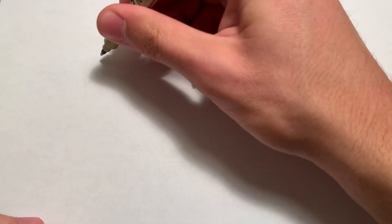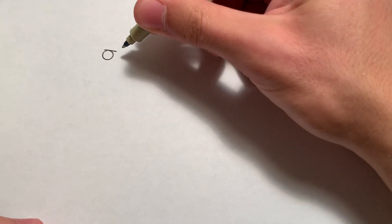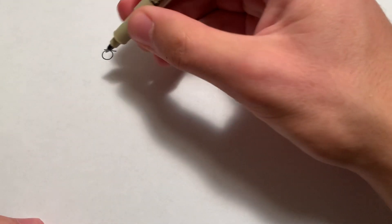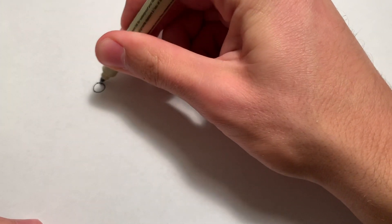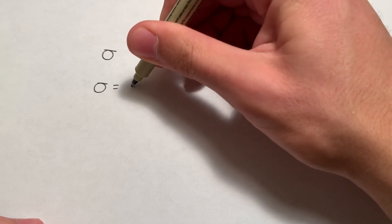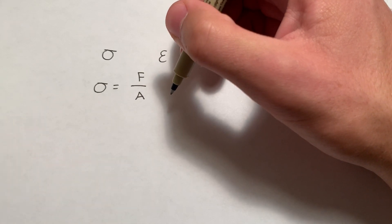You'll recall these two terms should be familiar to most people. Sigma is stress and epsilon is strain. Starting with stress, stress is the force per unit area. It's not the same as pressure, which we usually use to describe something uniform, right? Like air pressure or water pressure, where it's acting all around you.